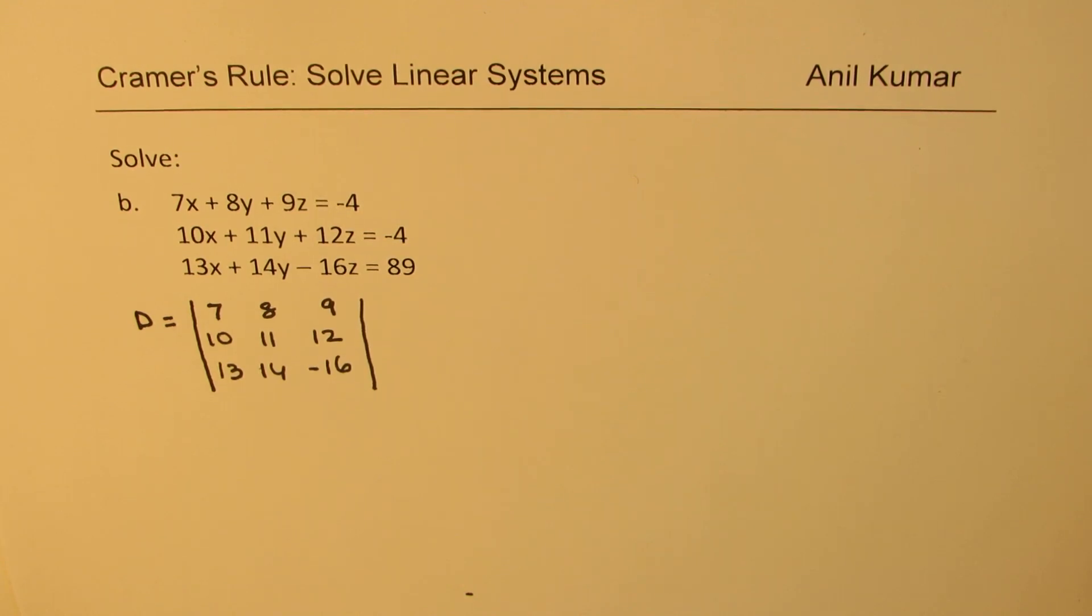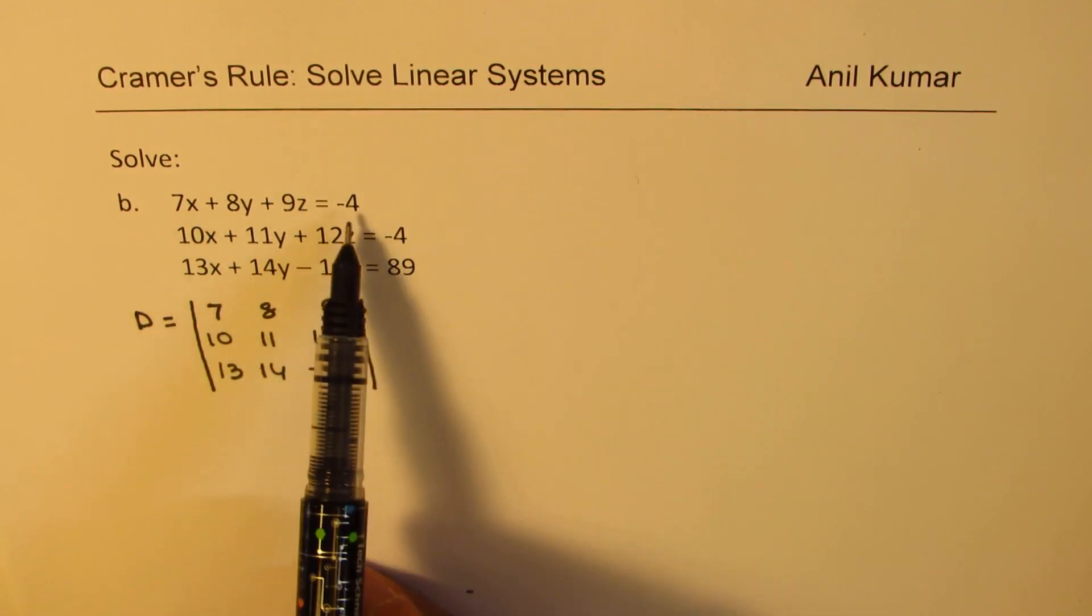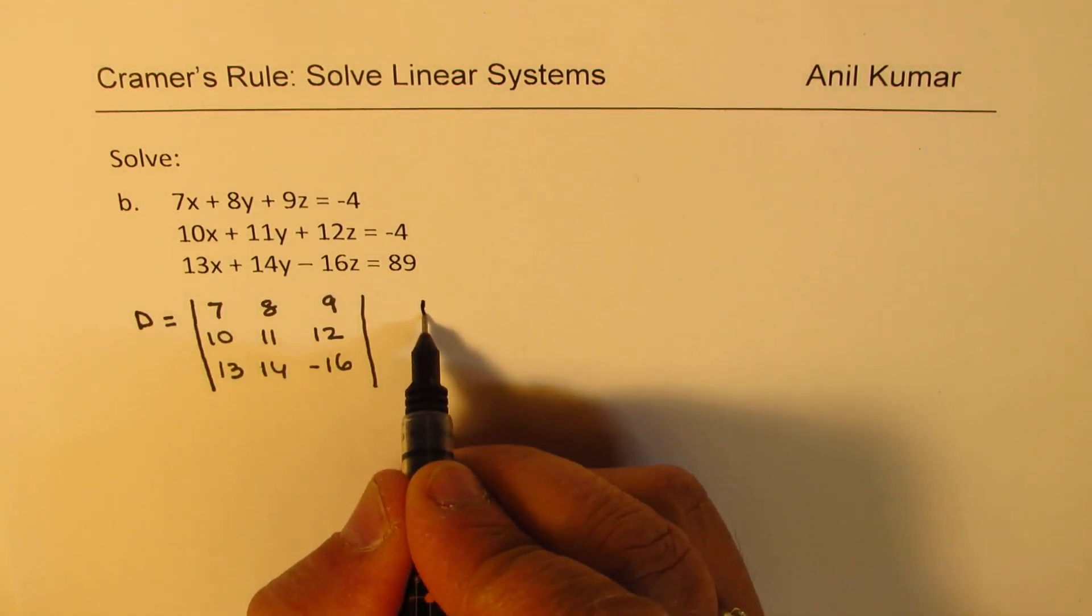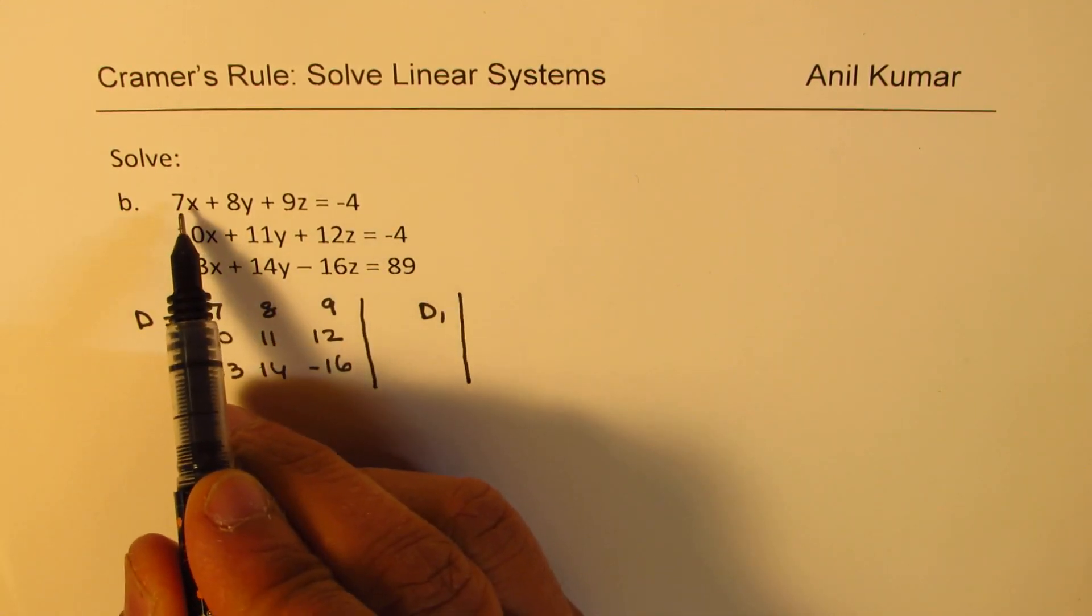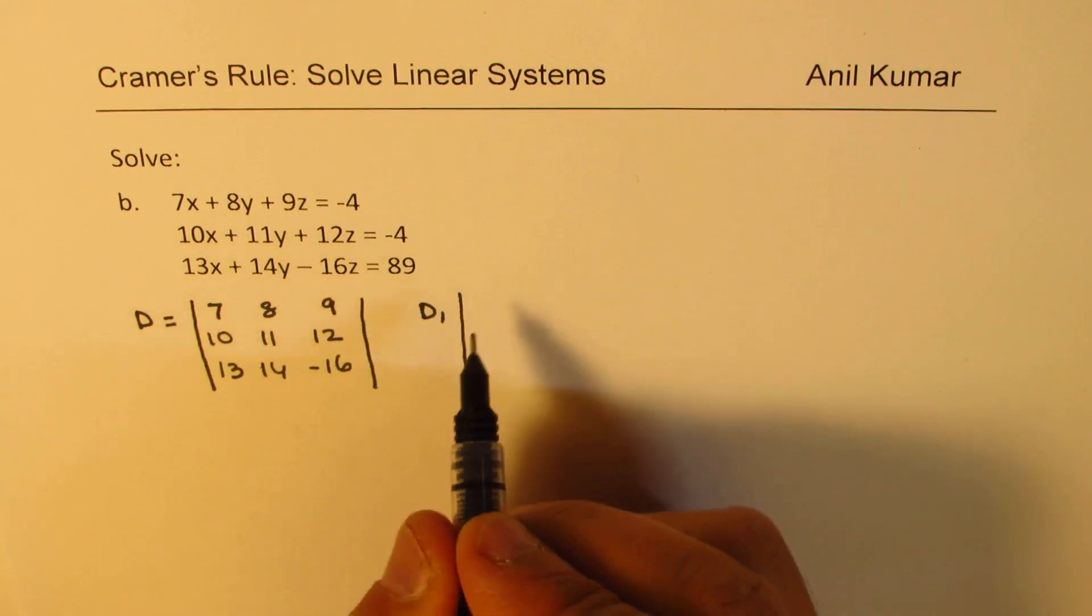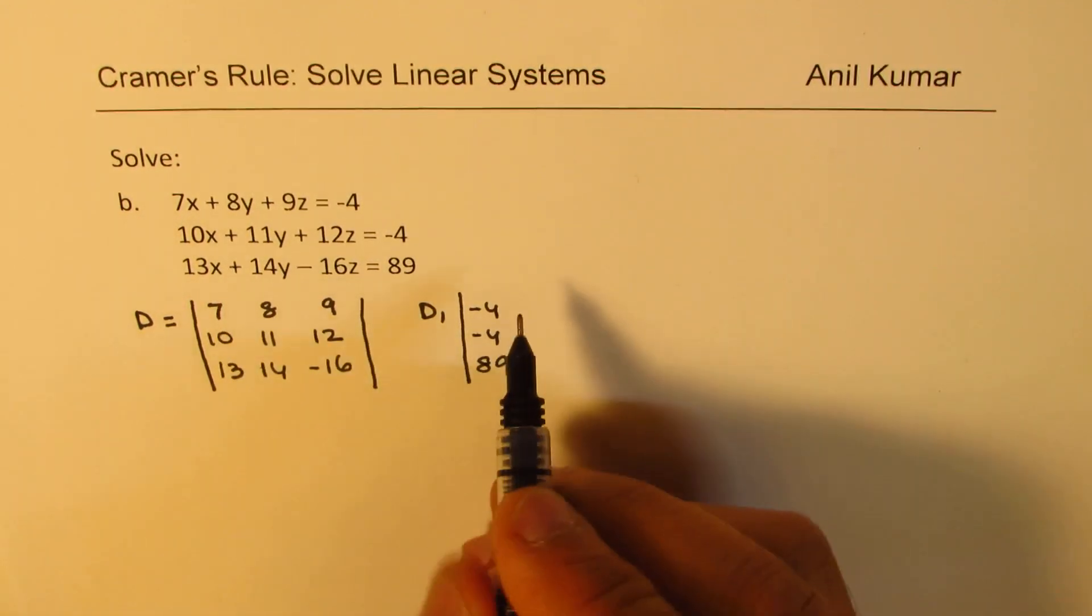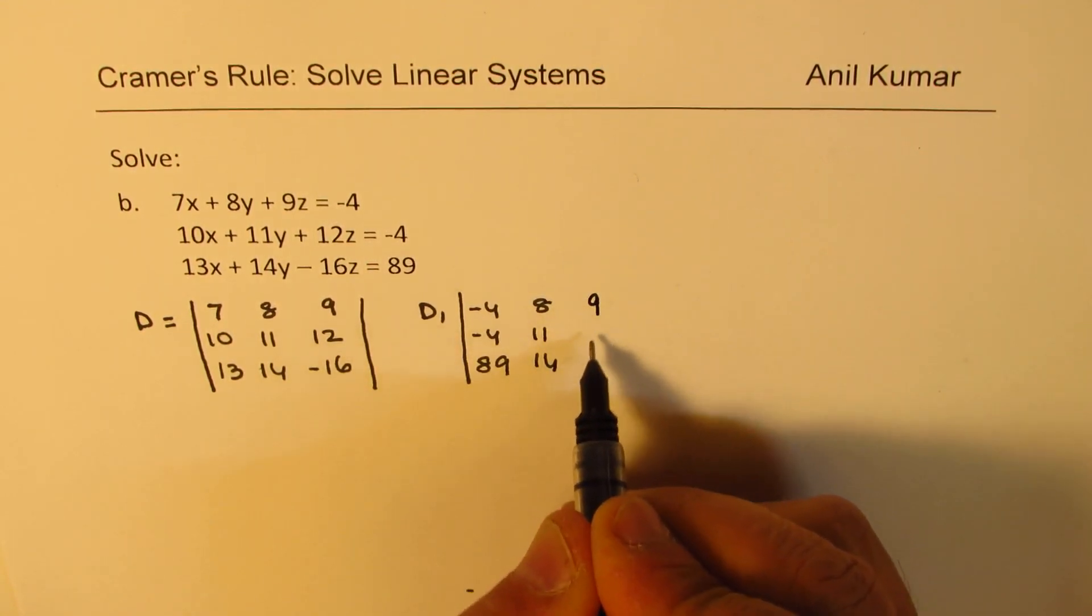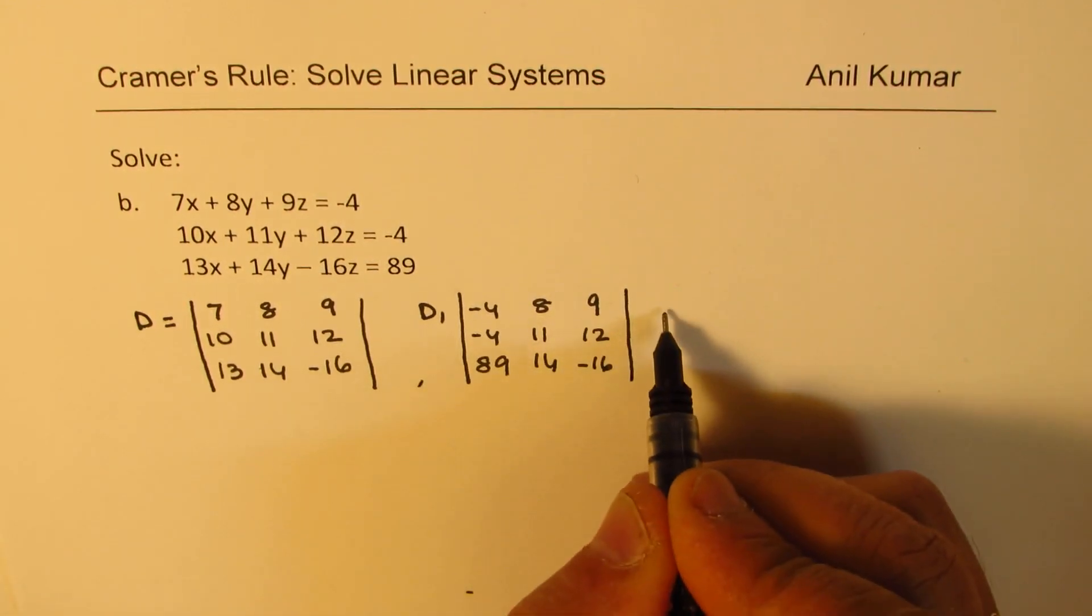Now, we also need to calculate the values for the determinant when we replace the x values by the given values on the right side. So, we call this as D1. So, let's write down what is D1 for us. D1 for us is we'll just replace all these x coefficients with -4, -4 and 89, and keep retain the other values which are 8, 11, 14 and 9, 12 and -16.